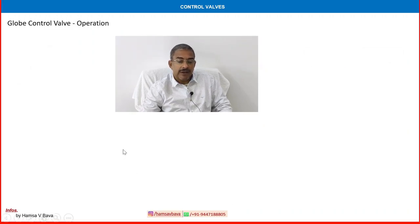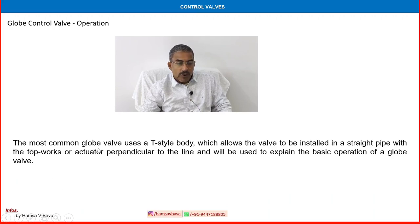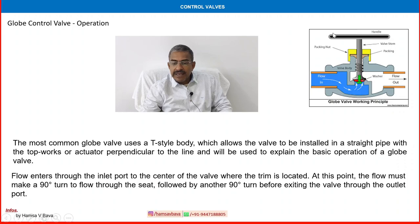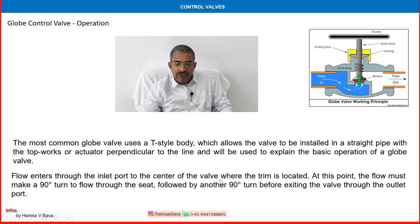Regarding control valve operation: the most common globe valve uses a T-style body, which allows the valve to be installed in a straight pipeline. The top works or actuator is perpendicular to the line. The actuator is perpendicular to the opening and closing element. Flow enters through the inlet port to the center of the valve, where the trim is located. At this point, the flow must make a 90-degree turn to flow through the seat.